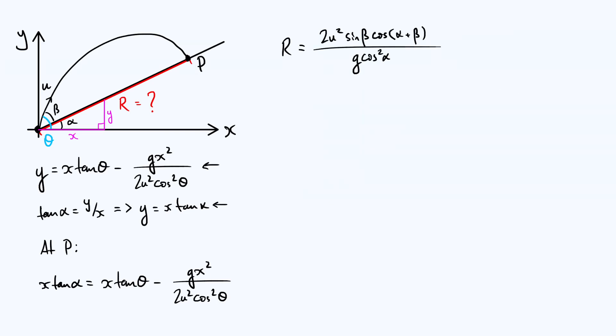One thing that's worth checking at this stage is just seeing what happens when alpha is zero. If alpha is zero you get 2u squared sine beta cos beta over g. In that case, of course, theta is the same as beta, because theta is alpha plus beta and if alpha is zero then theta and beta are the same. That expression 2u squared sine theta cos theta over g is the standard well-known expression that we get for the range of projectile on flat ground. So that's reassuring.